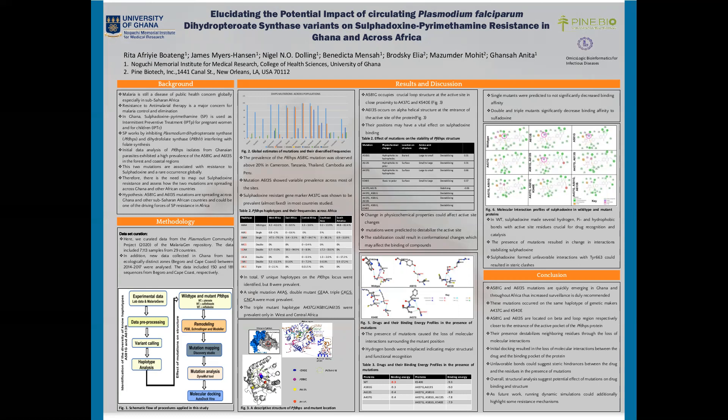Our objectives were divided into two parts. Firstly, to identify the diversity of mutations alanine 581 glycine and alanine 613 serine in Ghana and across Africa. To achieve this objective, data processing, variant calling, and haplotype analysis were performed.